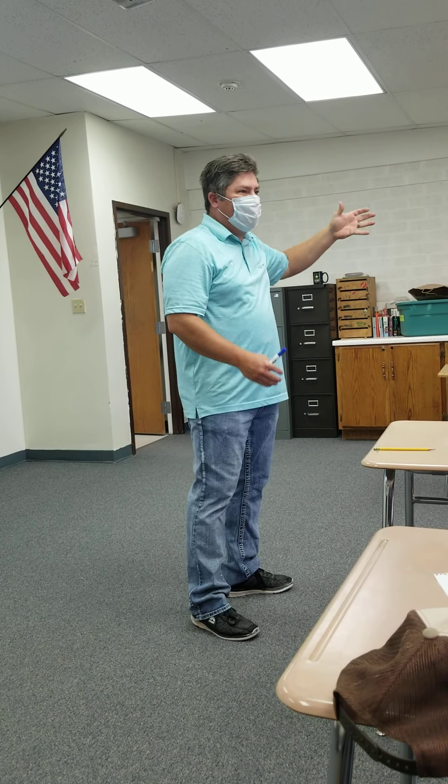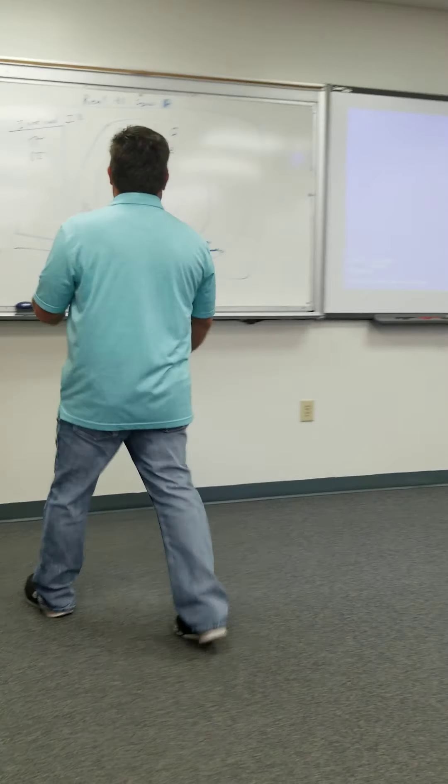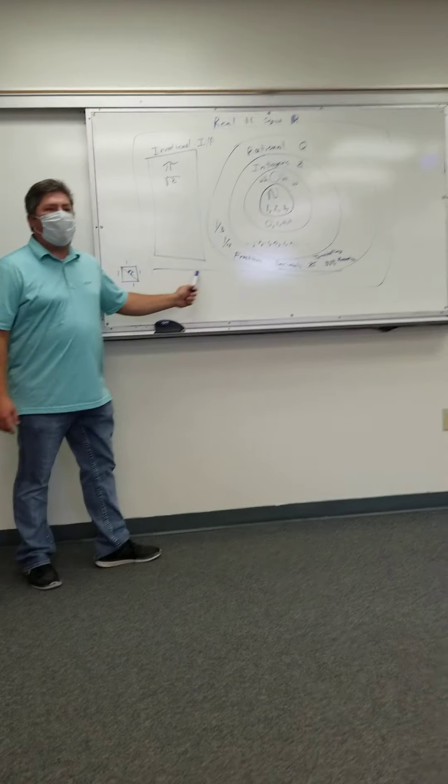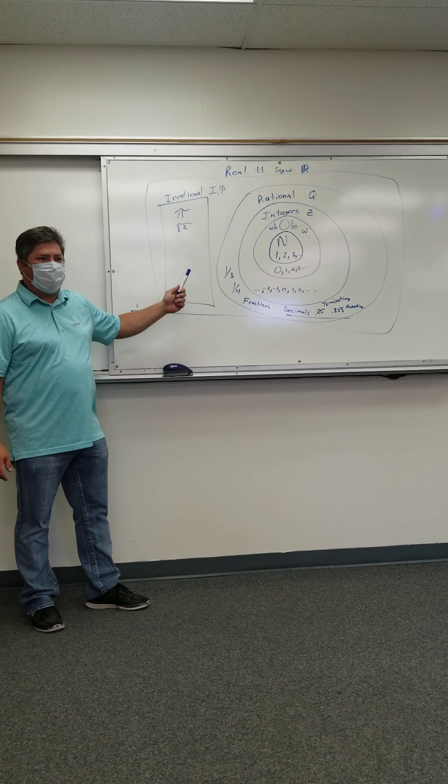We have something rational, we have something irrational, we have something real, we have something that is imaginary. So we use the words correctly in math to figure out what we're doing. This is everything you do in math. This is the real number system. This is all the numbers we pretty much deal with when we're doing math.